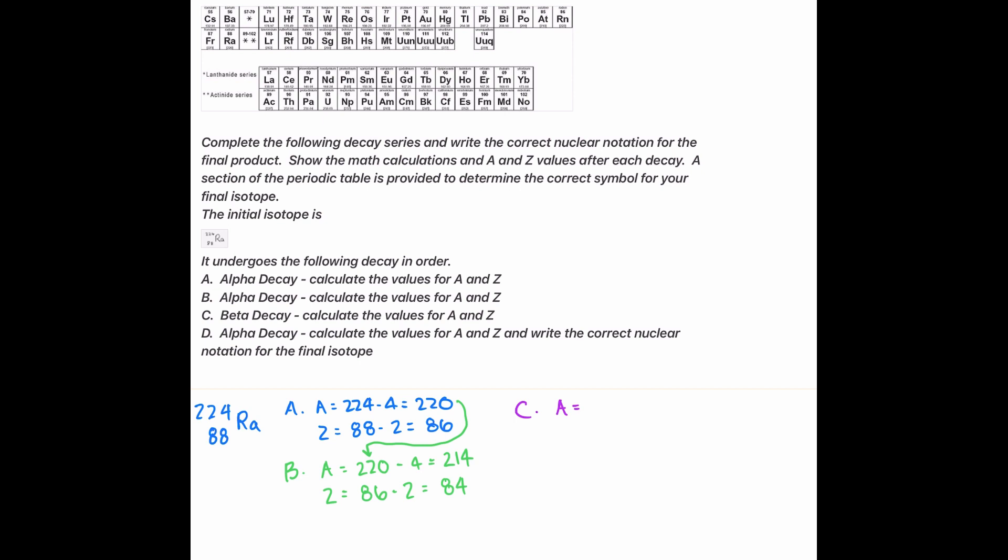We're going to still take that number we ended the last one with, except in this one we're going to minus by 0, because that's just how beta decay works. And this should be 216. This is why I don't trust myself to do mental math.